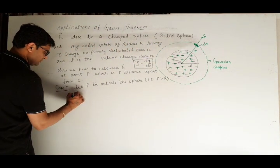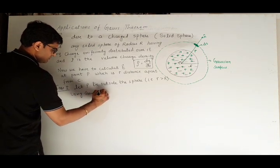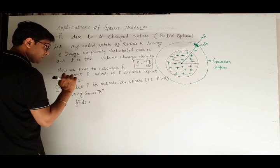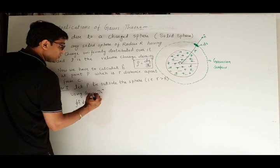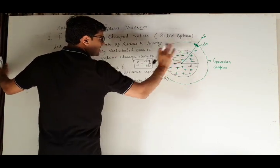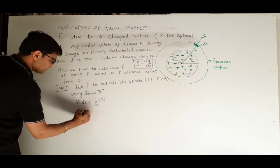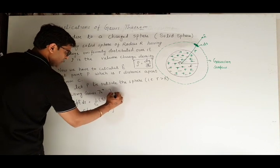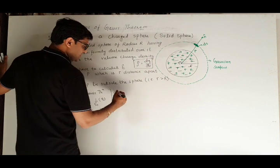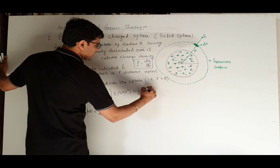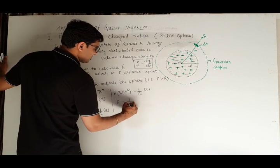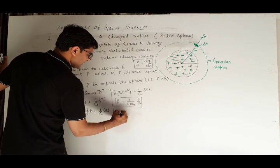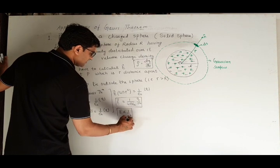Using Gauss theorem, the integral of E dot ds over the closed surface equals 1 by epsilon-naught into the total charge within the Gaussian surface, which is plus Q. So E into ds equals 1 by epsilon-naught into Q. The surface area of the Gaussian surface is 4πr², giving us E equals Q divided by 4π epsilon-naught r². This means E is inversely proportional to r squared.